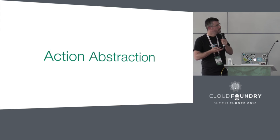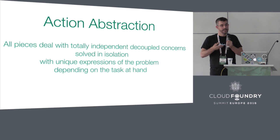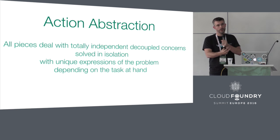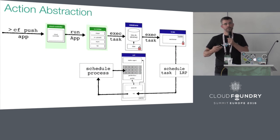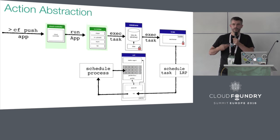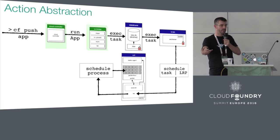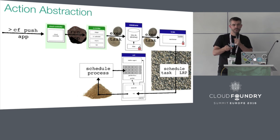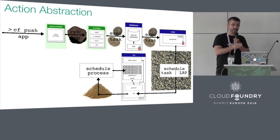Diego itself has what we loosely term action abstraction. All the pieces within Diego are totally independent, decoupled concerns, meaning they can solve their task at hand in isolation and have unique expressions of the problem as it flows through the Diego system. As you CF push your app to the Cloud Controller, the Cloud Controller passes it to a bridge layer called the CC bridge, which then goes to Diego's database and on to an auction, and ultimately that request ends up as a scheduled process running on a container. As work flows through the system, it starts really coarse-grained and gets broken down into something very granular as a scheduled process.